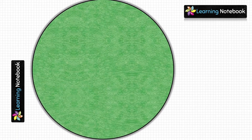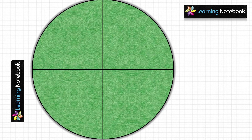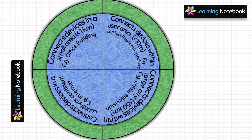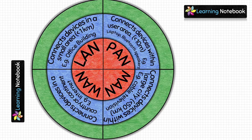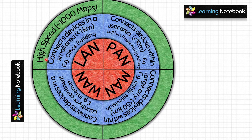Now take the green circle and fold it vertically as well as horizontally. Place the blue circle and the red circle on top of the green circle and match their centers. We are going to write more about these four types of networks. LAN usually has the highest speed out of all four networks — its speed can go up to 1000 Mbps.